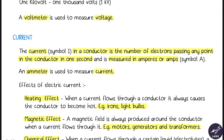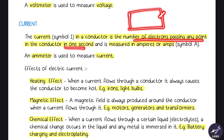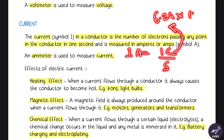Current is the number of electrons passing any point in a conductor in one second. It is given by coulombs per second. If the current generated is one ampere, it is one coulomb per second, and one coulomb corresponds to 6.24 × 10¹⁸ electrons. When this many electrons flow through a point of a conductor in one second, the total current is one ampere.